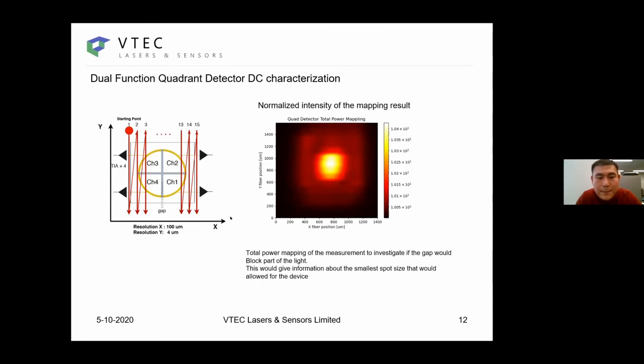What we did is we did a mapping, which means we moved the fiber on top of the core detector. If we plot the normalized intensity of the total power of the four quadrants, we get the picture on the right hand side. The reason we do this is we would like to know the influence of the gap. If we have a gap that is completely blocking the light, in real application we won't be able to focus the spot smaller than the gap size. But in this case, we didn't see any presence of the gap, which might indicate the light hitting on the gap is scattered again into the active area of the photo detector.